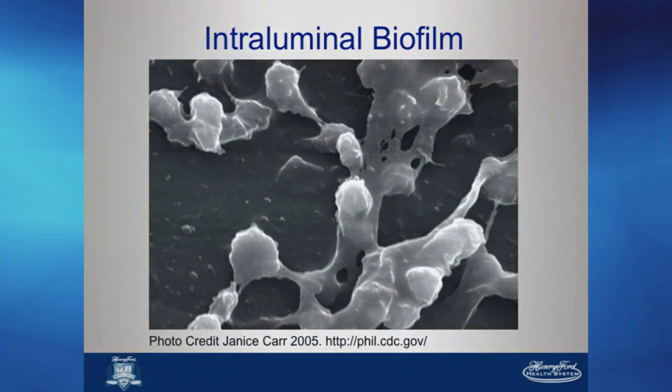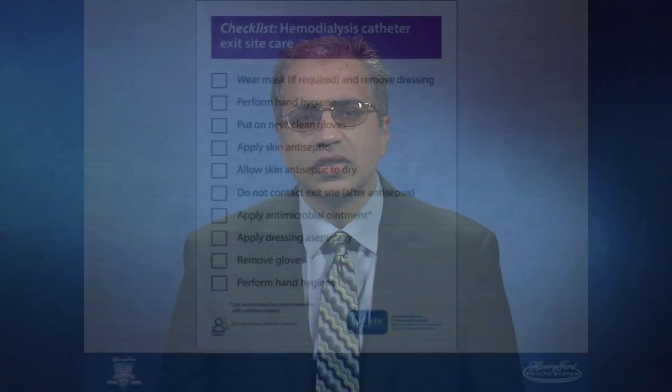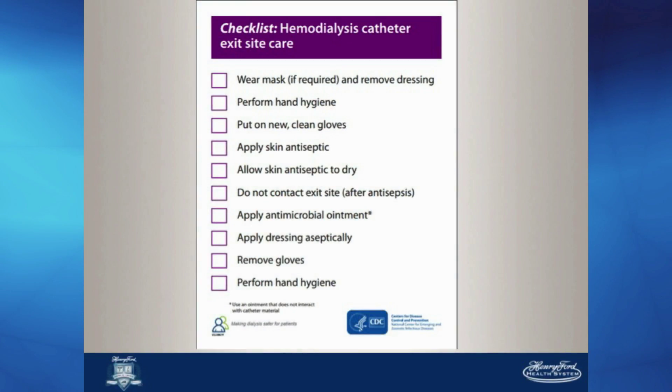Preventative therapies center on appropriate catheter maintenance, infection control measures, and early removal of devices as patients transition to an AV fistula or graft when the latter become ready for use. Checklists have been designed to synchronize catheter care and decrease variability that may lead to error.